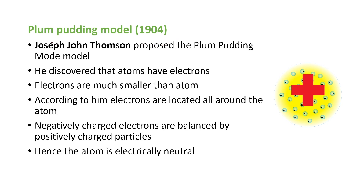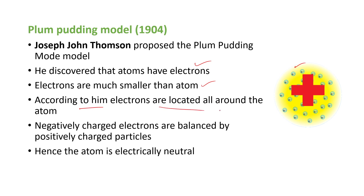Next is the Plum Pudding model, proposed in the year 1904 by John Joseph Thomson. According to this model, he discovered that atoms have electrons. Electrons are subatomic particles with a negative charge, and they are much smaller than the atom. According to this model, the electrons are located all around the atom. You can compare this model to a watermelon, where the seeds are scattered everywhere inside the fruit.